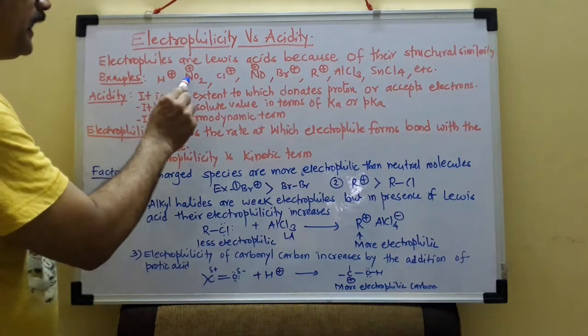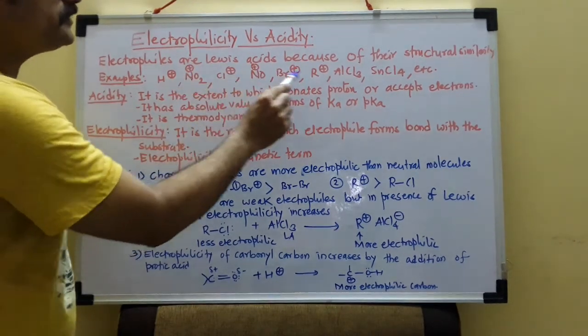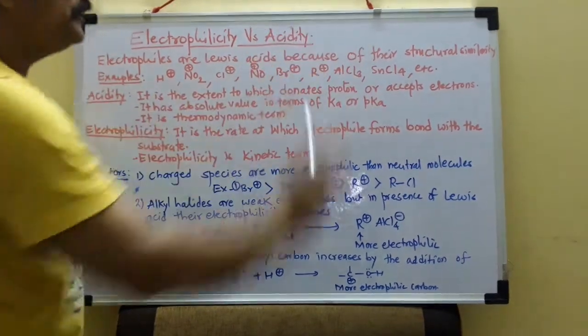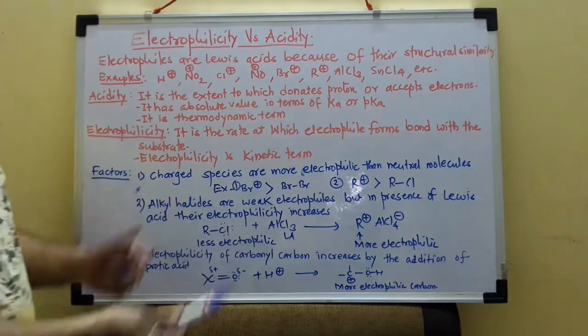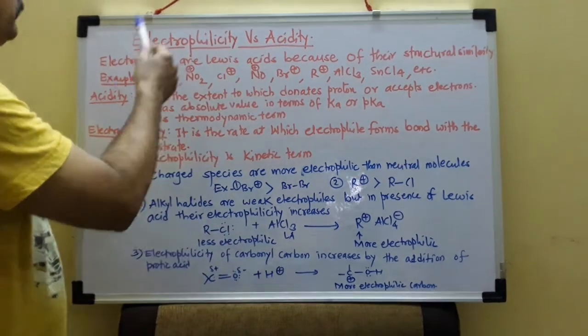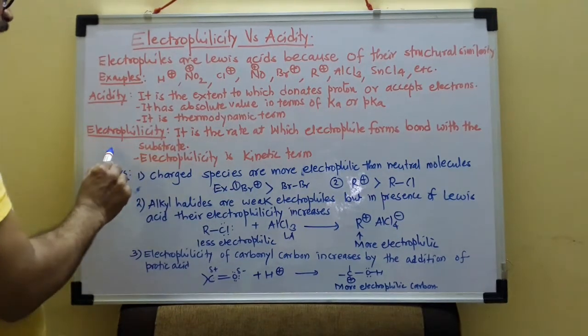Why? Because they are having electron deficient center, either having positive charge or vacant orbital, just like AlCl3, SnCl4. We can use number of examples. Again there is a confusion which is electrophile and which is acid. So we will clear that point under the heading acidity and electrophilicity.